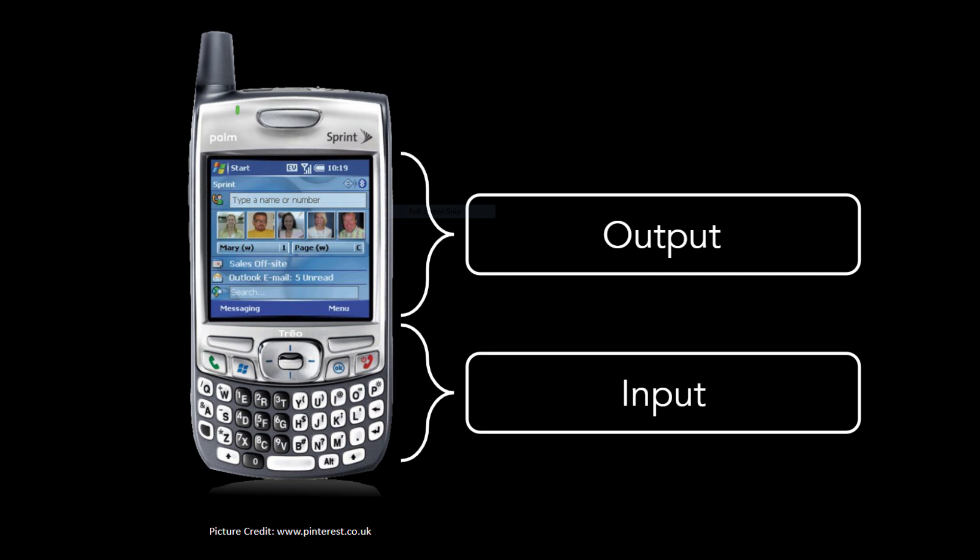In his presentation, Steve Jobs noticed some flaws in this design. The buttons couldn't change. They were always there so you could press them by accident, and they took up valuable space on the phone. Apple's solution to these problems was quite simple: build a phone that was all screen and no buttons.